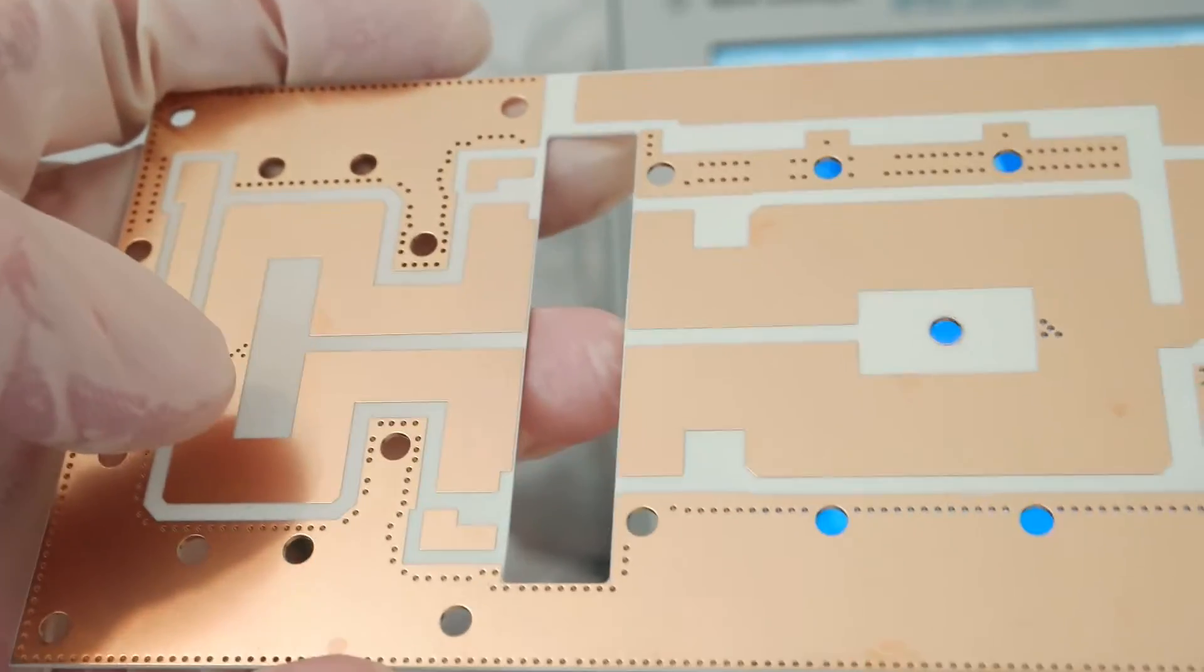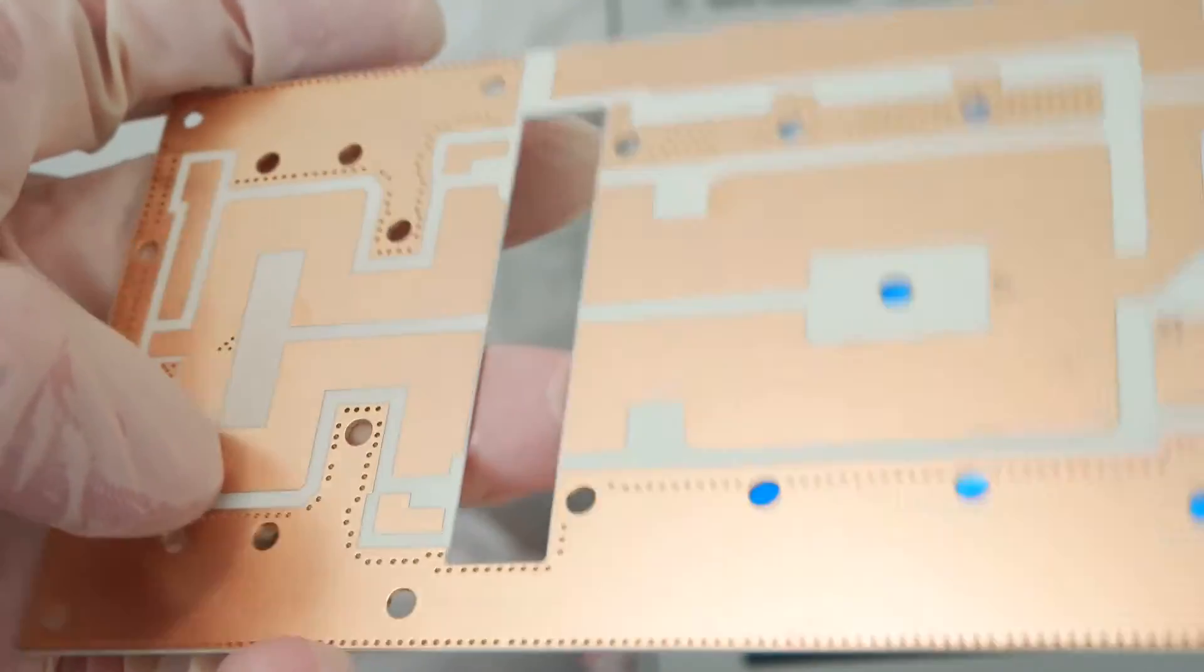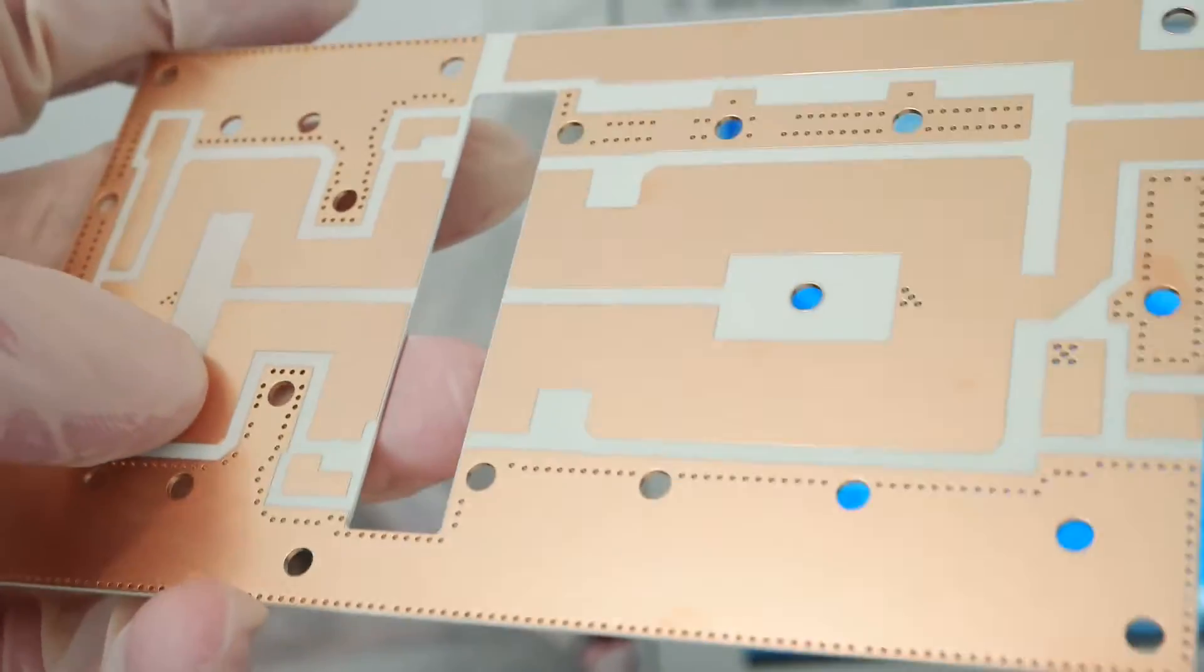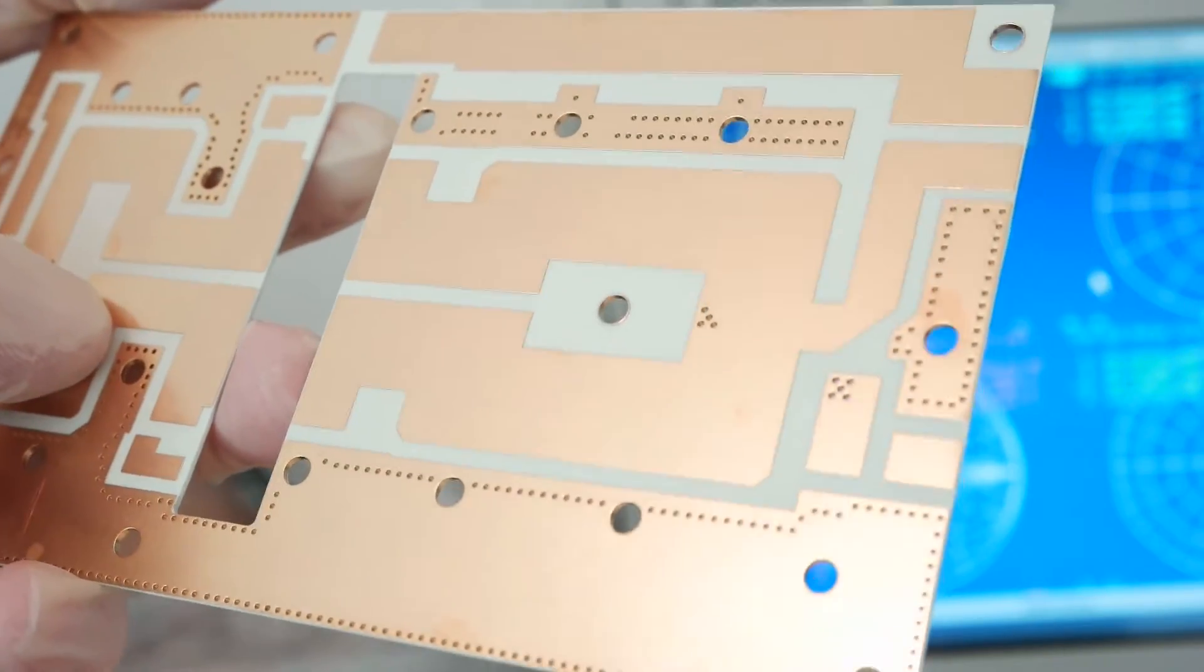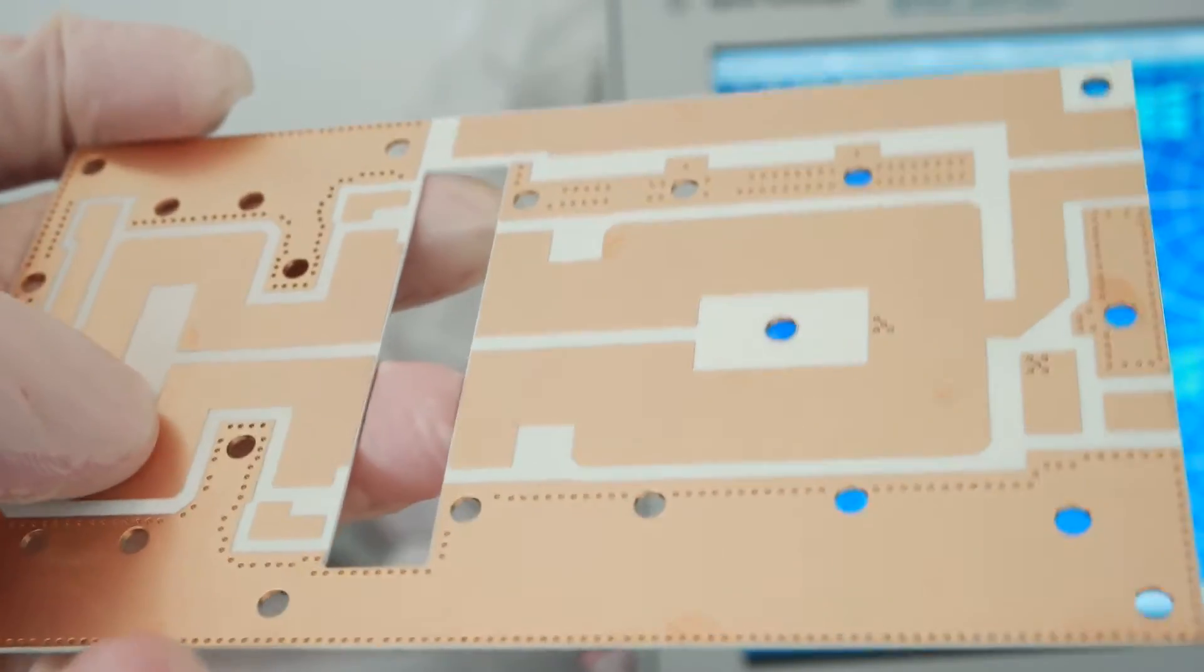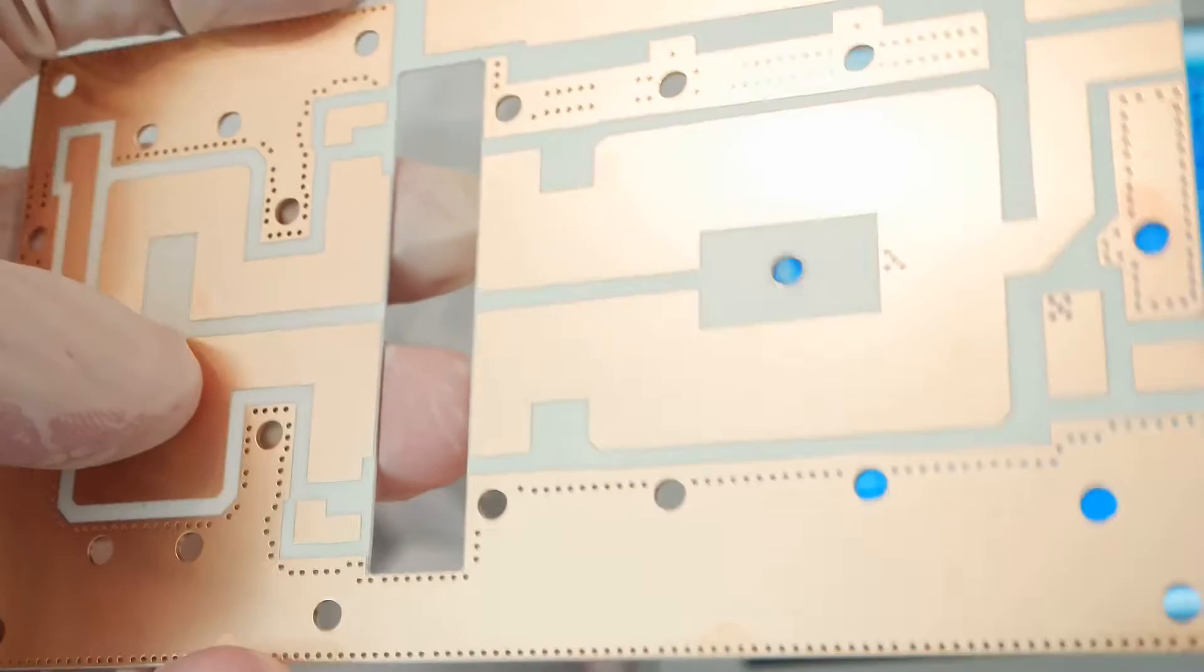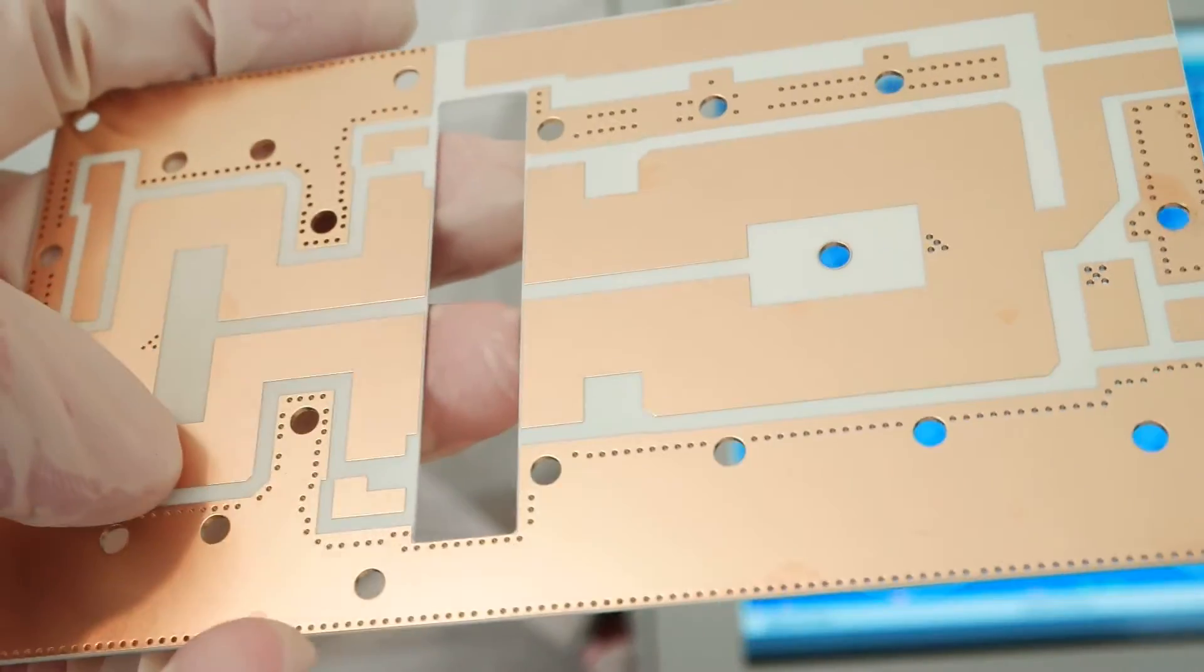Hi guys, today I want to show you this board. It is an application board for one kilowatt application and it is a planar transformer design. This board is coming directly from the application note. It is made with very high quality ceramic microwave materials.